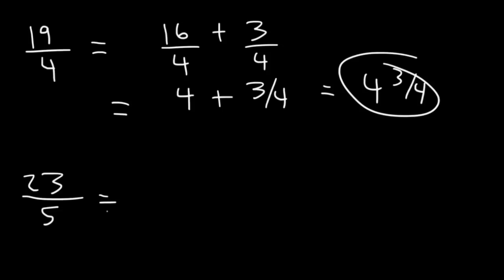Now, for the next one, 5 goes into 23 how many times? It goes into 23 four times. 5 times 4 is 20. 23 minus 20 is 3, so 3 remaining. And, the denominator is going to be the same. So, it's 4 and 3 fifths.